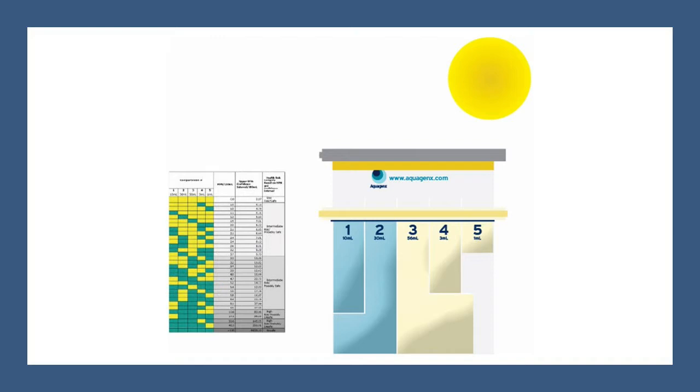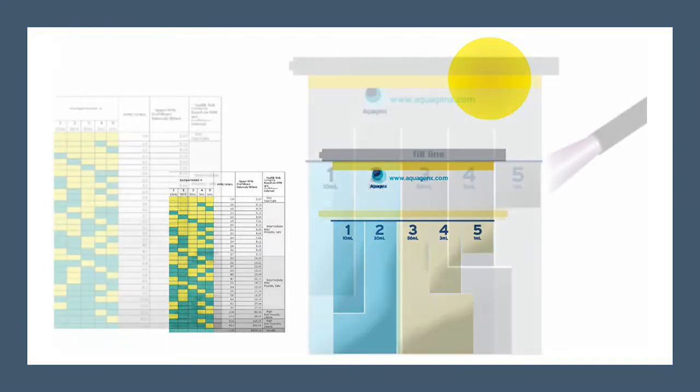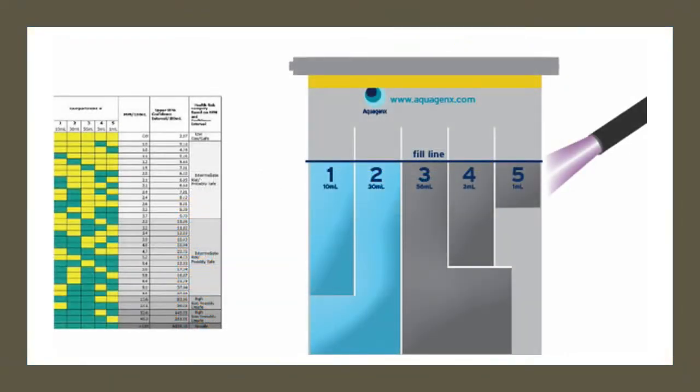To detect E. coli, view the compartment bag in ambient light. To detect total coliforms, view the compartment bag under a UV light in a dark environment.